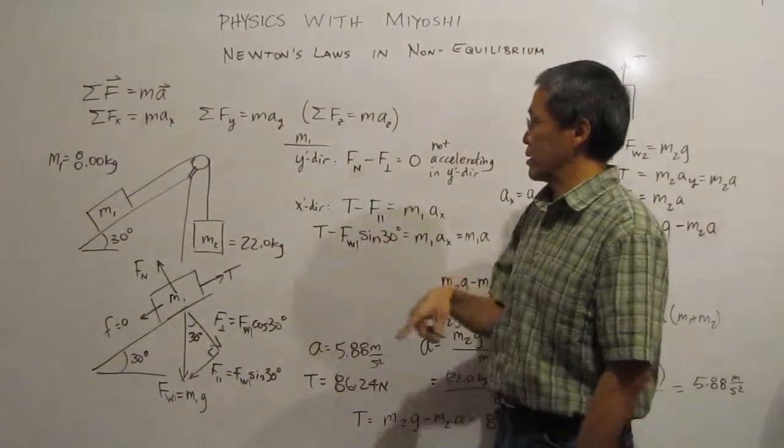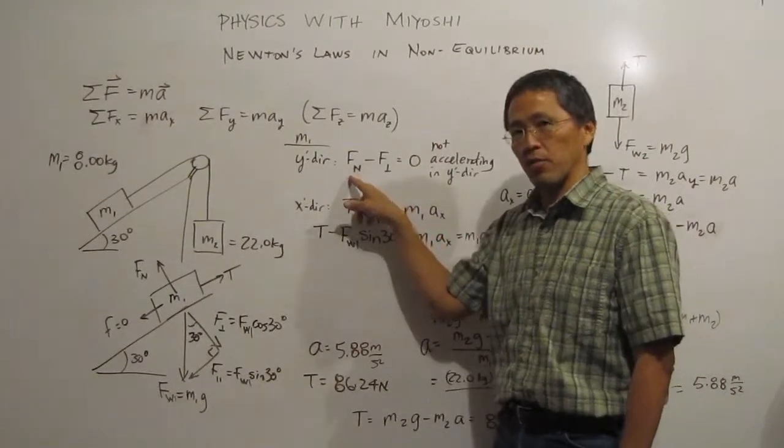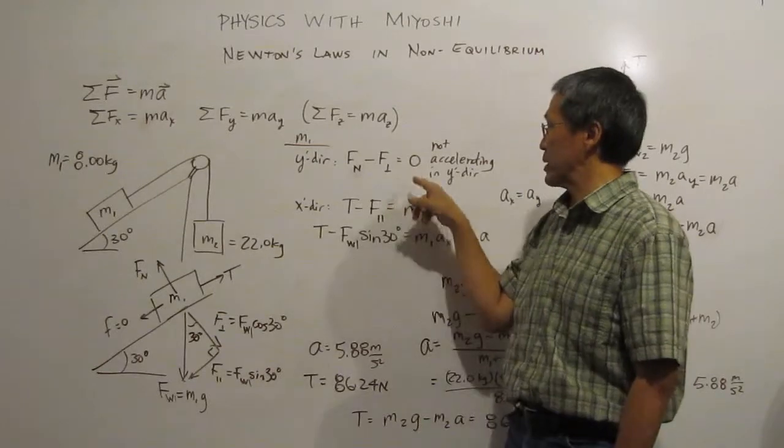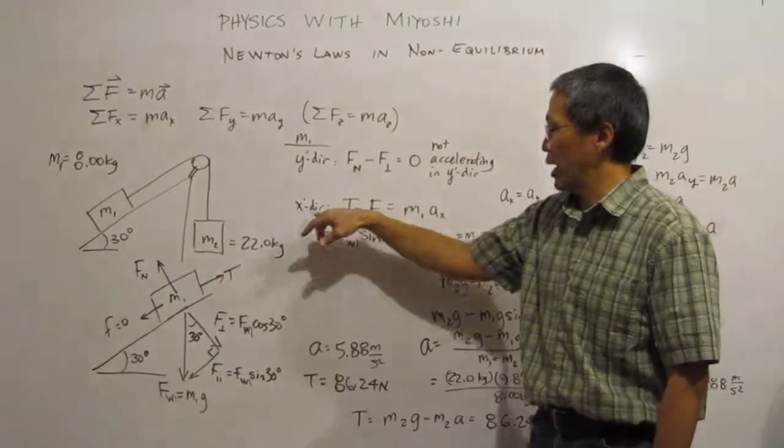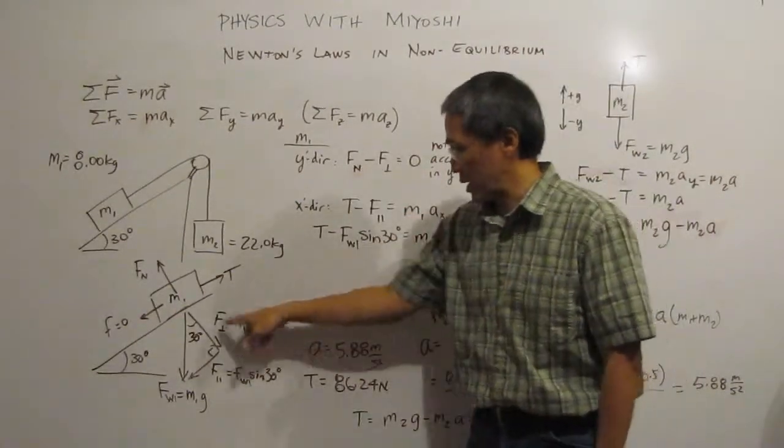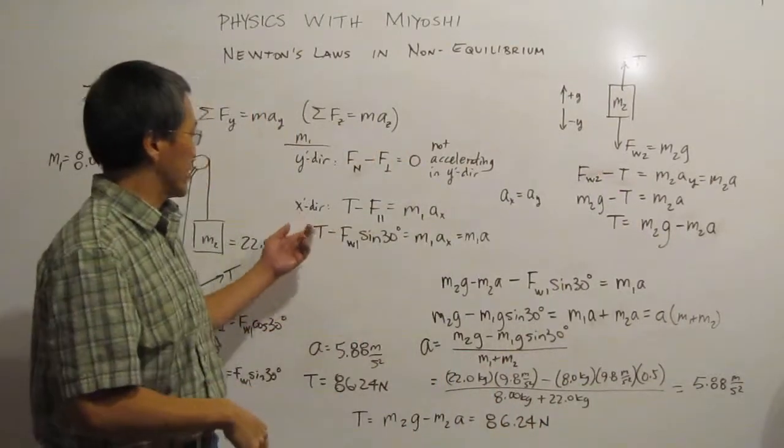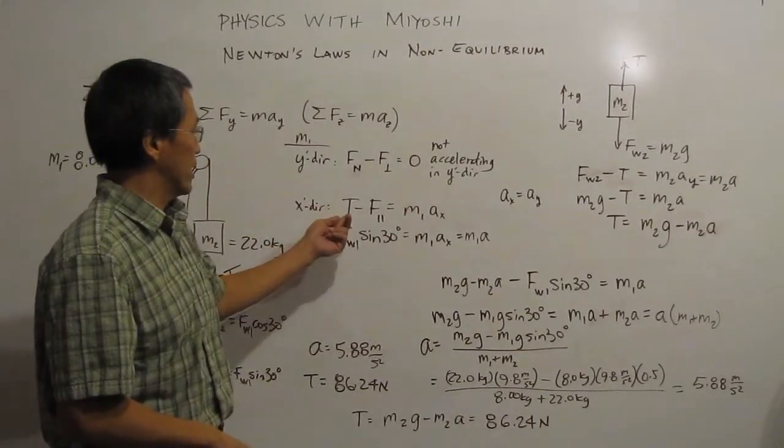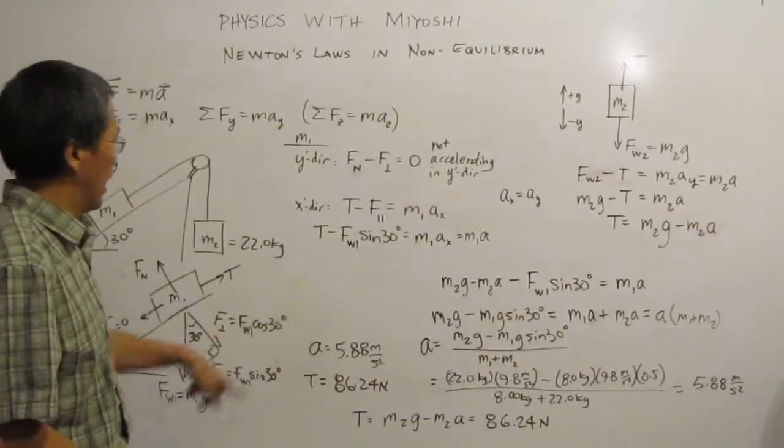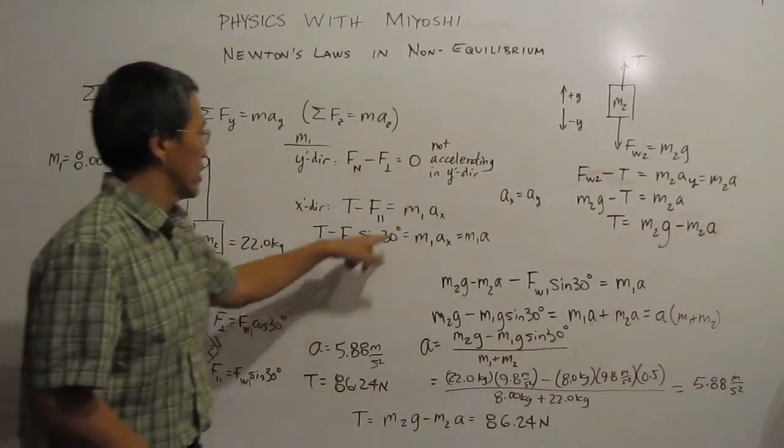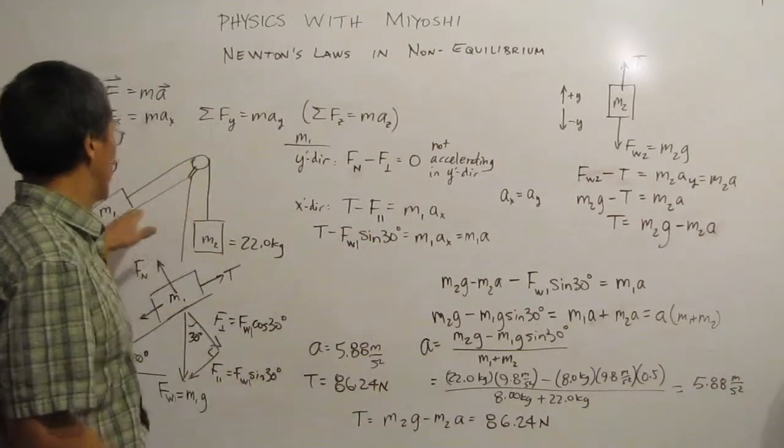Now when we rearrange this, or when we look at this guy, we can see that we don't really care about the y component because it's not accelerating in this direction. So in our y direction, our y prime direction for this free body diagram, we can see that for mass 1, the normal force minus the perpendicular force is going to be 0. We don't really care because it's not accelerating in that direction. So we're done with that part. We don't really have to do any calculations. Then what we look at is the x direction. And when we calculate the x direction, we can see that the sum of our forces is our tension minus our parallel force is going to be mass 1 times acceleration in the x direction.